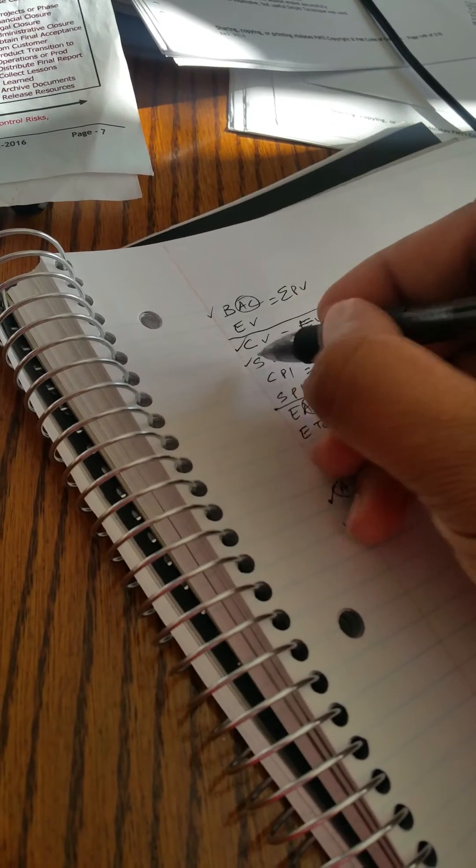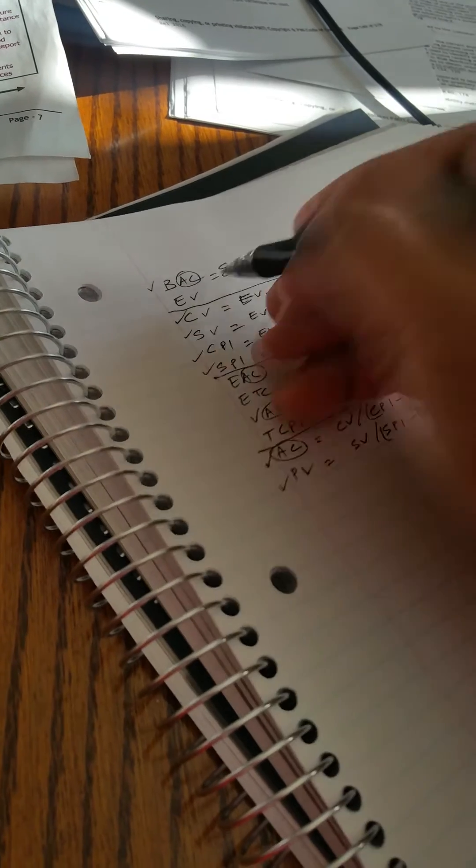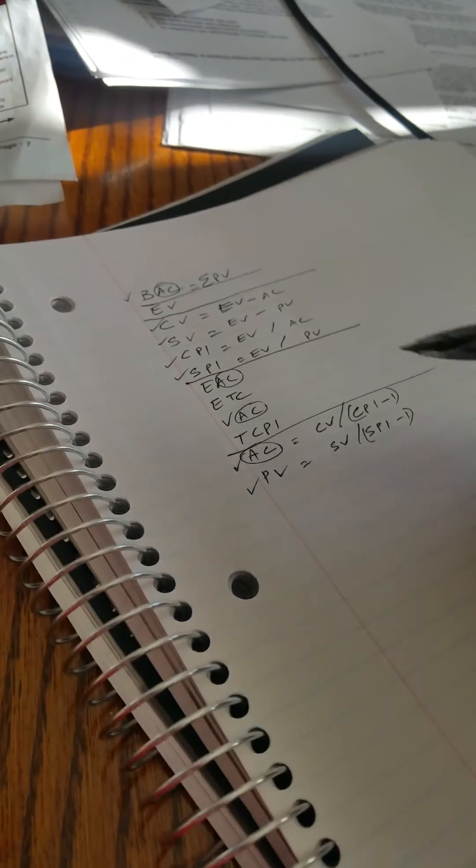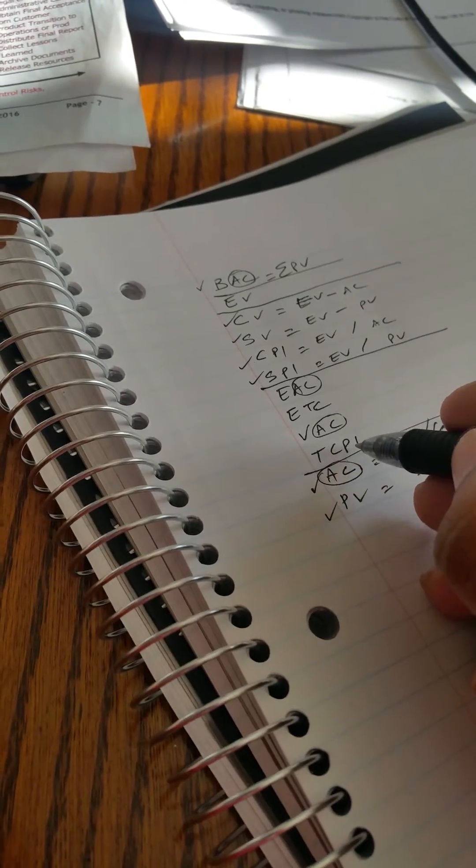Now that we have done 1, 2, 3, 4, 5, 6, 7... I'm going to try to fill out the remaining ones. TCPI, if you look at the symmetry between this one and this one, you can tell that EV and AC will be present to some capacity.